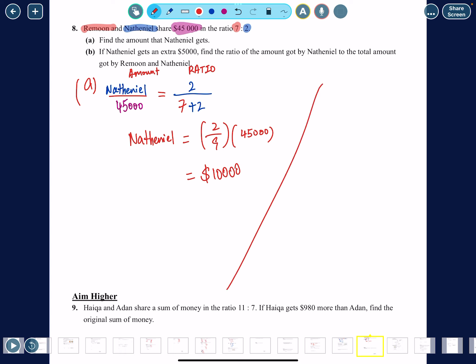If Nathaniel gets an extra $5,000, find the ratio of the amount got by Nathaniel to the total amount of Ramoon and Nathaniel. So Nathaniel divided by total. Basically you just divide them. If Nathaniel gets $5,000 more, it's going to be $15,000 now, and the total amount is going to be $45,000 plus $5,000, which is $50,000. Then you simplify this: you should get 3 out of 10, and the ratio is 3 to 10.